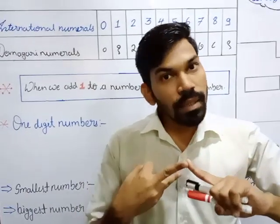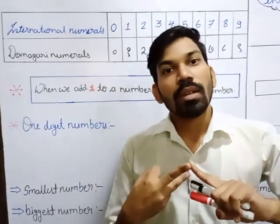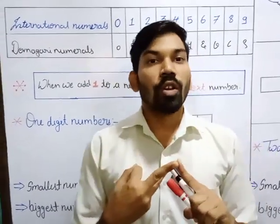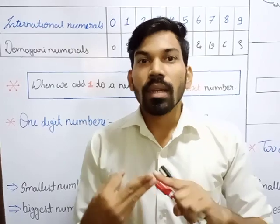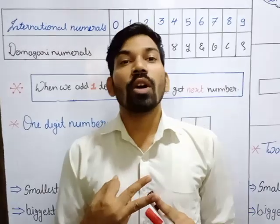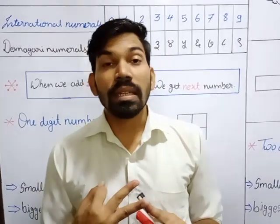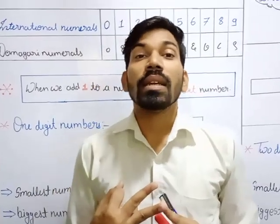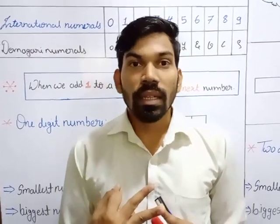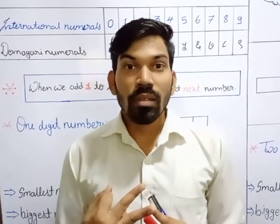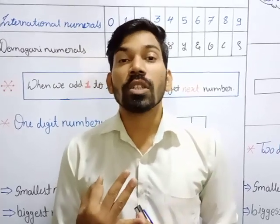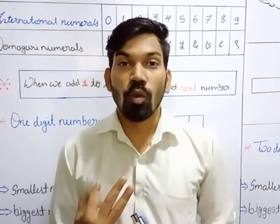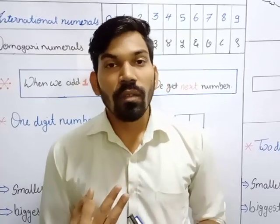The first one is International Numerals. The second are Devanagari Numerals — those are in Hindi. And the last one, the third one, is Roman Numerals.